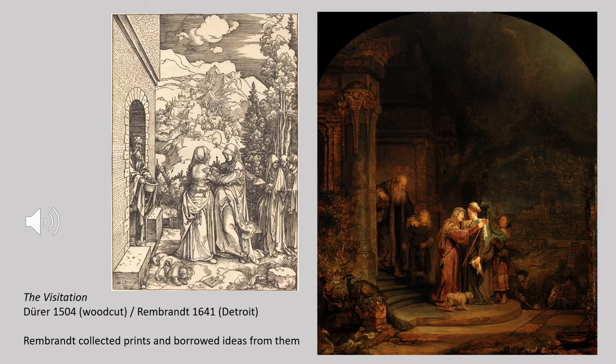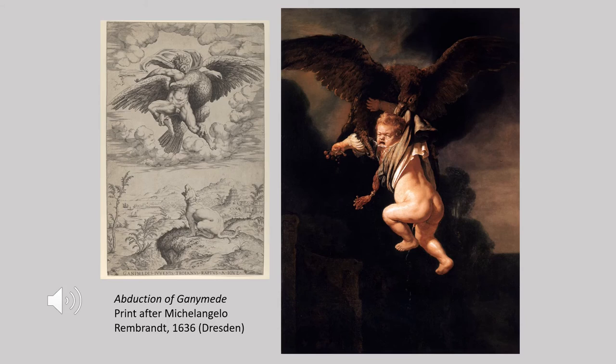Rembrandt was an avid collector of prints, and we can see cases where his collection served as inspiration. Dürer's famous woodcut depicting the Visitation from his Life of the Virgin series seems to have led directly to Rembrandt's painting of the same subject. In other cases he seems to have deliberately gone against tradition — the Abduction of Ganymede, typically an opportunity to represent a beautiful youthful male figure, Rembrandt turns into a crying, urinating baby — possibly a commission to commemorate the death of an actual infant, but also a way of poking fun at the classical tradition.